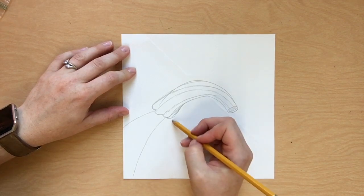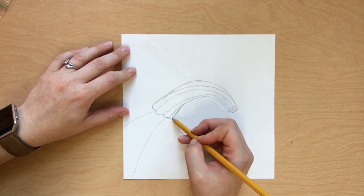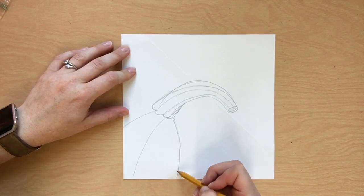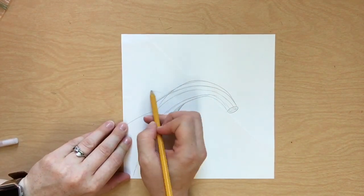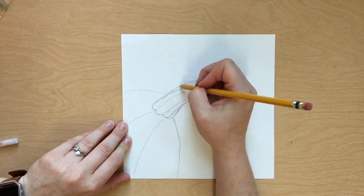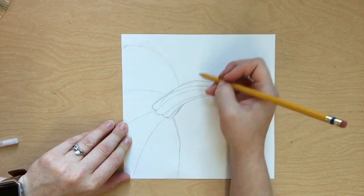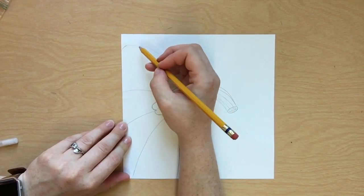Followed by another curved line, curving in the same direction. This curve is opposite. This is one of the lobes of the pumpkin closest to us. So pay attention to which way the pumpkin is curving. Remember, you can always stop this video.